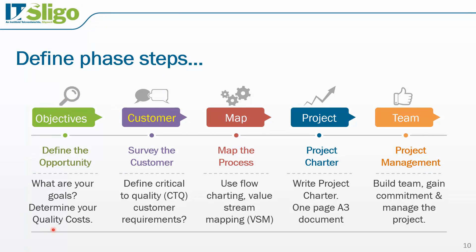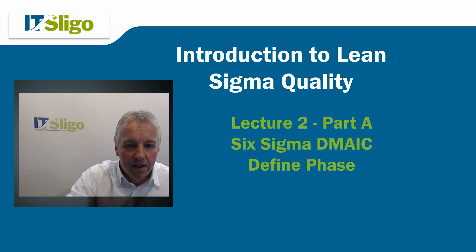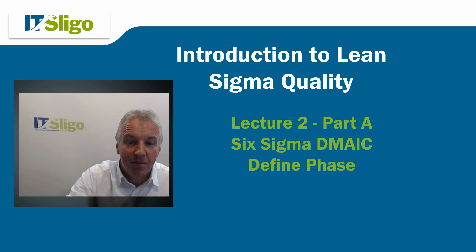Once we understand our goals, we need to determine what our quality costs are. We'll talk in more detail about the cost of quality and the different types of quality costs, because with all Six Sigma projects there has to be a financial saving. That's the end of part A, looking at the Six Sigma DMAIC define phase. We'll see you next time.